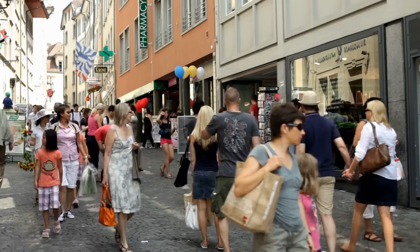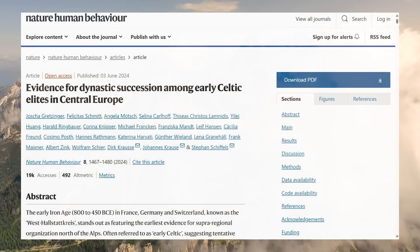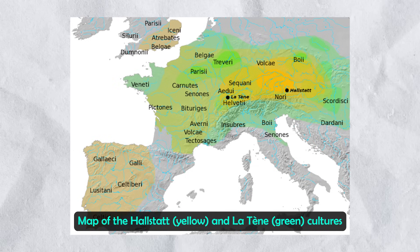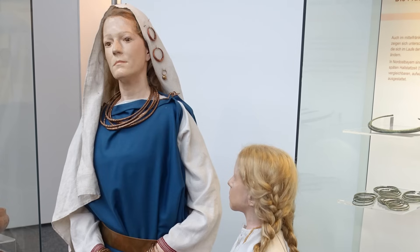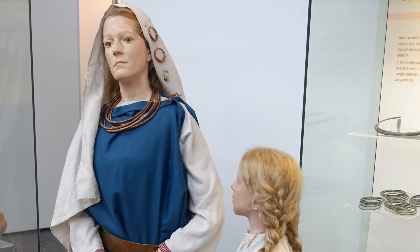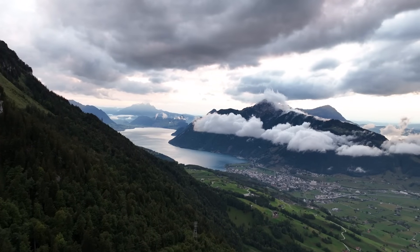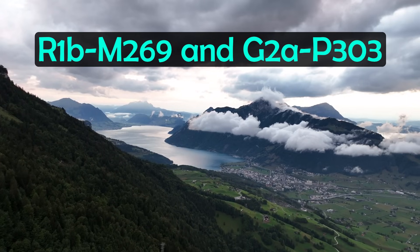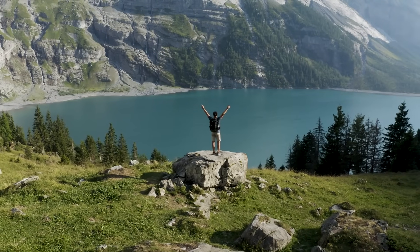An interesting study from earlier this year, published in Nature of Human Behaviour, looked at the early Iron Age in France, Germany and Switzerland, known as the West Hallstatt area. This was during a time when the Hallstatt culture flourished in Europe, a culture often referred to as early Celtic, and which was followed by the La Tène culture, very much associated with the ancient Celts. This study analysed 31 individuals from this context in southern Germany, dating between 616 and 200 BC. They found that the Y-DNA haplogroups of these people were dominated by R1B-M269 and G2A-P303, reflecting this earlier mixing of both steppe ancestry and ancestry from the previous peoples of Europe.